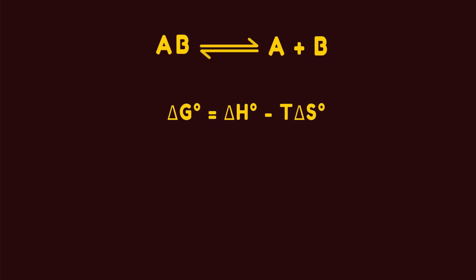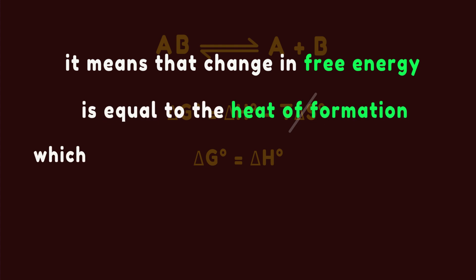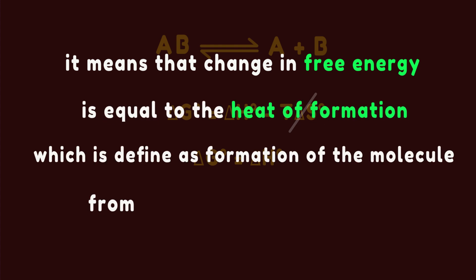In this equation, we assume that change in the entropy of our system is zero. So delta G equals delta H. It means that change in free energy is equal to the heat of formation, which is defined as formation of the molecule from its constituent elements.